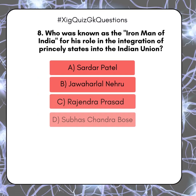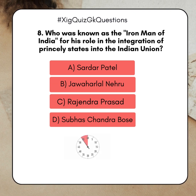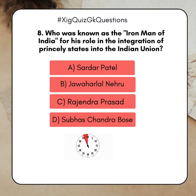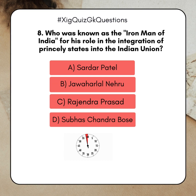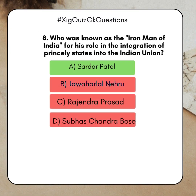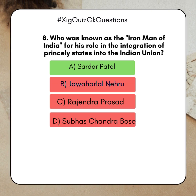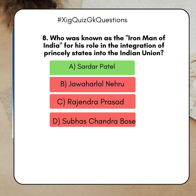Who was known as the Iron Man of India for his role in the integration of princely states into the Indian Union? A. Sardar Patel. B. Jawaharlal Nehru. C. Rajendra Prasad. D. Subhas Chandra Bose. Answer: A. Sardar Patel.